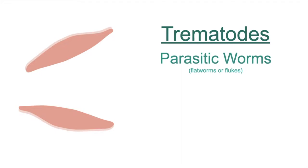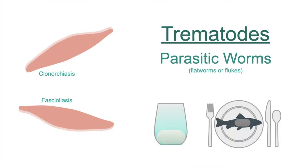Two of the most common are clonarchiasis and fasciolysis, which can enter the body orally through ingestion of raw meat or fish that is infected by the trematodes.